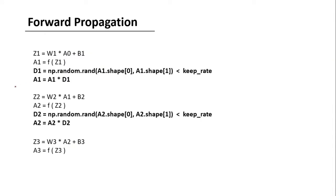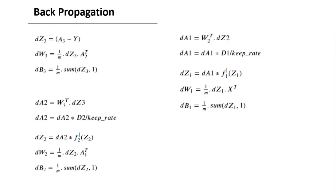In our forward propagation equations, we add two additional steps: we generate the D matrix and multiply it with A, and we do this for all hidden layers but not the output layer, since we do not want to drop any neuron in the output layer. Because we've dropped say 20% of the neurons, the value of A will be 20% less, which would affect our cost function. To keep the value of A close to the original, we divide it by the keep_rate. So the final forward propagation equations include multiplying A by D and dividing by keep_rate.